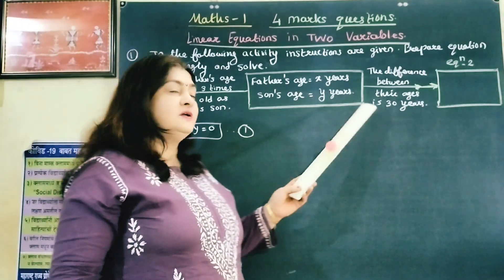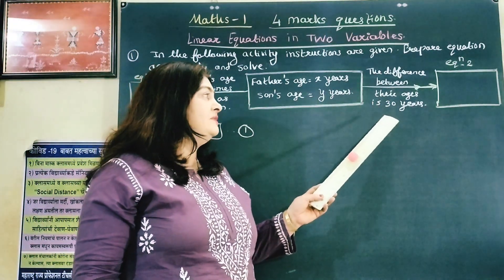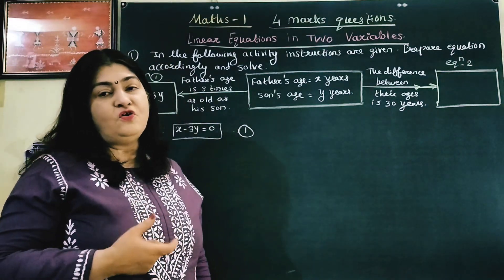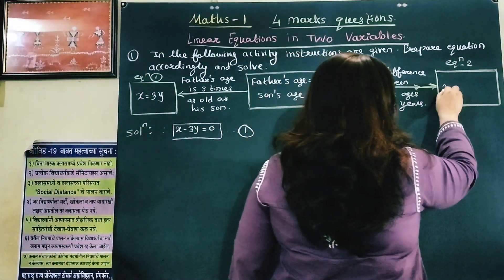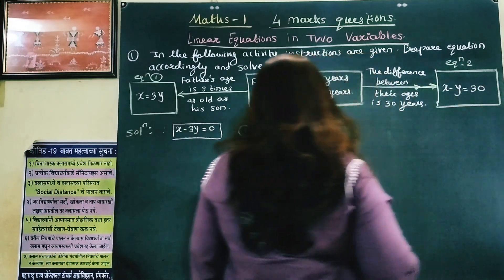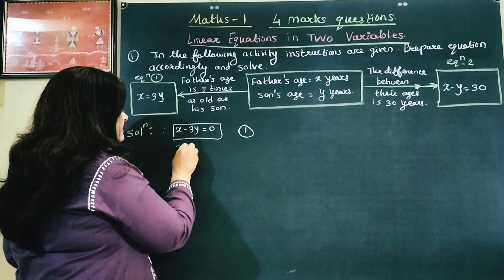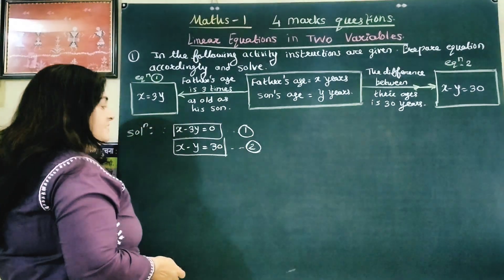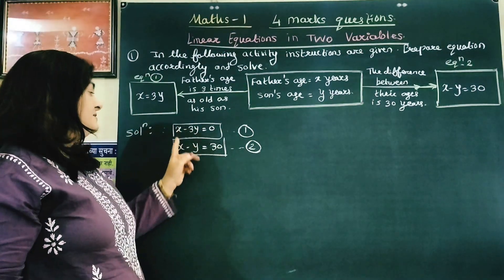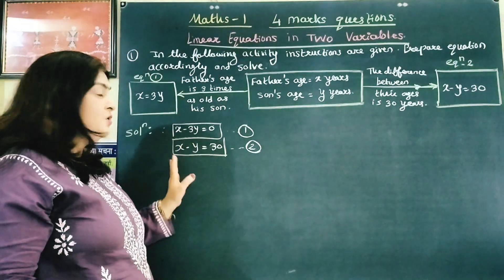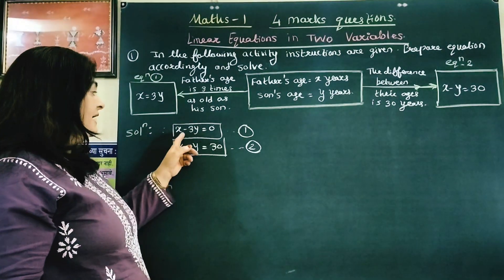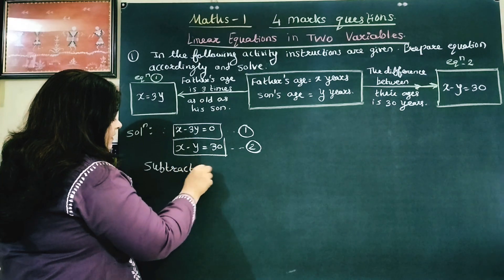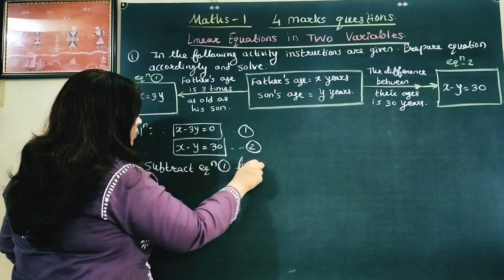The second instruction says the difference between their ages is 30 years. So X minus Y equals 30. This is equation 2. I am going to eliminate X. Both X terms have coefficient 1 and are positive, so I will subtract equation 1 from equation 2.